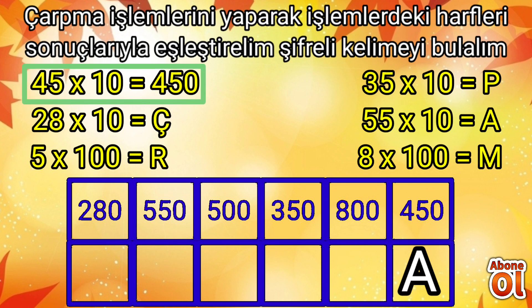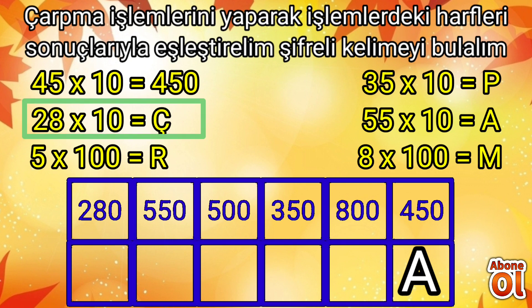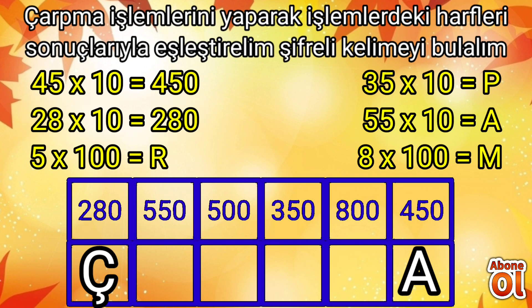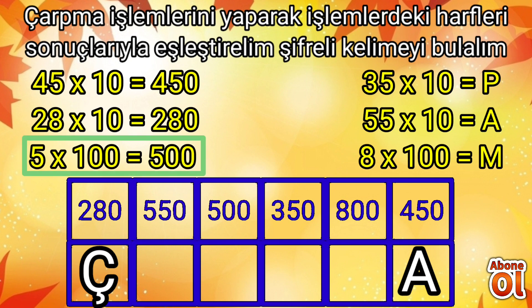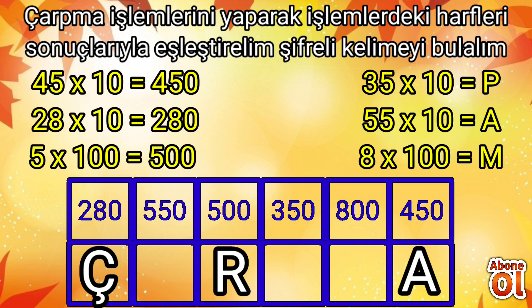İlk işlemdeki A harfini 450'nin altına ekliyoruz; son harfimiz çıktı bile. İkinci işlemi yapalım: 28 ile 10'u çarpıyoruz. 28'i aynen yazıp 10'daki bir sıfırı ekliyoruz; sonuç 280'dir. Hemen 280'i tabloda buluyoruz ve Ç harfini en başa ekliyoruz. Devam edelim: 5 çarpı 100. 5'i aynen yazıp 100'deki iki tane sıfırı ekliyoruz; 500 eder. R harfini ortadaki 500'ün altına yerleştiriyoruz.